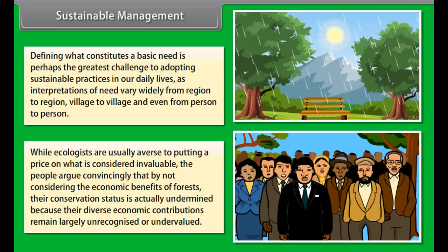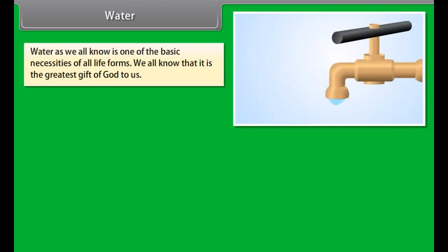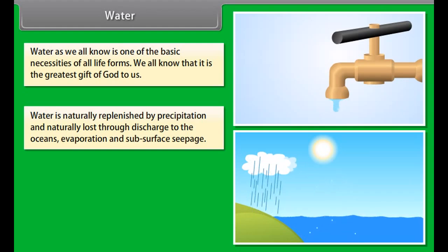To achieve sustainability, there must be a rethinking of what we consider a basic need. It is common in our society to say that we need a given resource, but how much of it do we really need to use? Defining what constitutes a basic need is perhaps the greatest challenge to adopting sustainable practices in our daily lives, as interpretations of need vary widely from region to region, village to village and even from person to person.